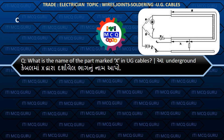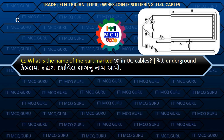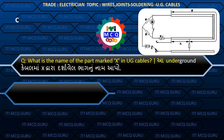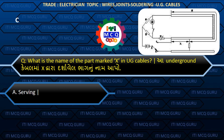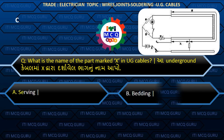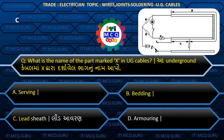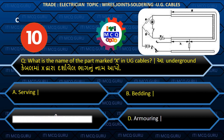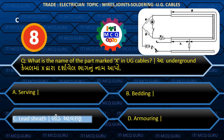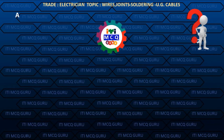What is the name of the part marked X in UG cables? (Underground cable maa X dwara darshavel bhaag nuu naam aapo.) Answer C: Lead sheet.